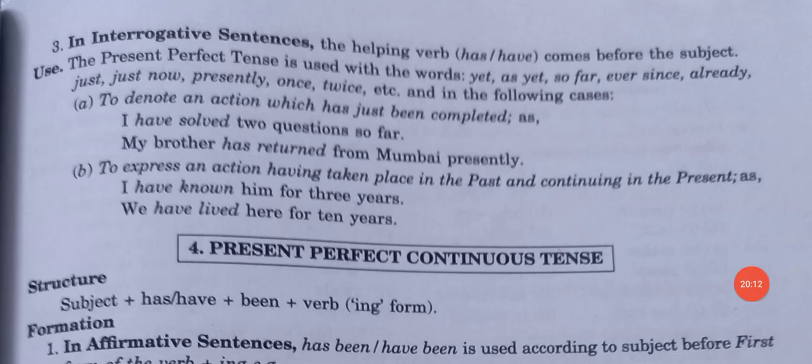In interrogative sentences, the helping verb has or have comes before the subject. The present perfect tense is used with words like yet, as yet, so far, even, since, already, just, just now, presently, only, twice. Use it: first, to denote an action that has just been completed — for example, 'I have solved two questions so far', 'My brother has returned from Mumbai presently'. Second, to express an action that took place in the past and is continuing — for example, 'I have known him for three years', 'We have lived here for 10 years.'